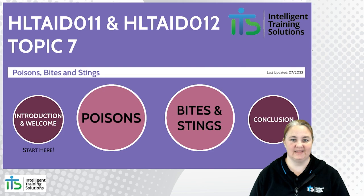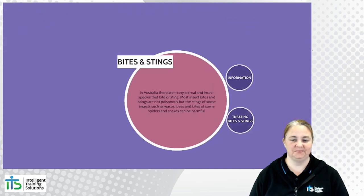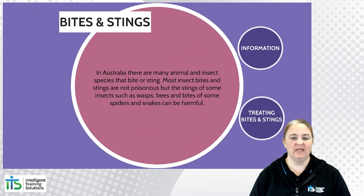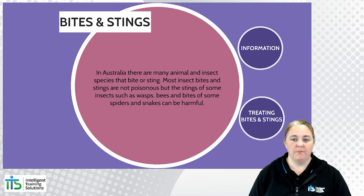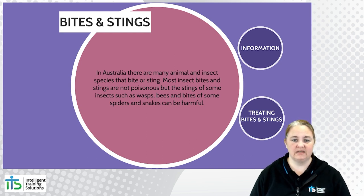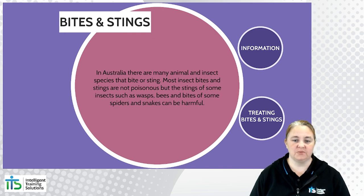Let's look now at bites and stings. In Australia there are many animal and insect species that bite and sting. Most insect bites and stings are not poisonous, but the stings of some insects such as wasps, bees, and bites from some spiders and snakes can indeed be harmful.